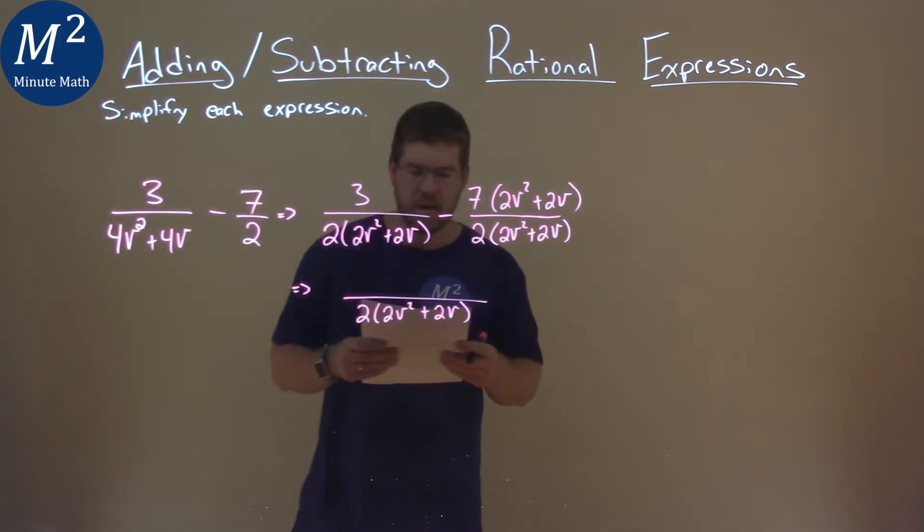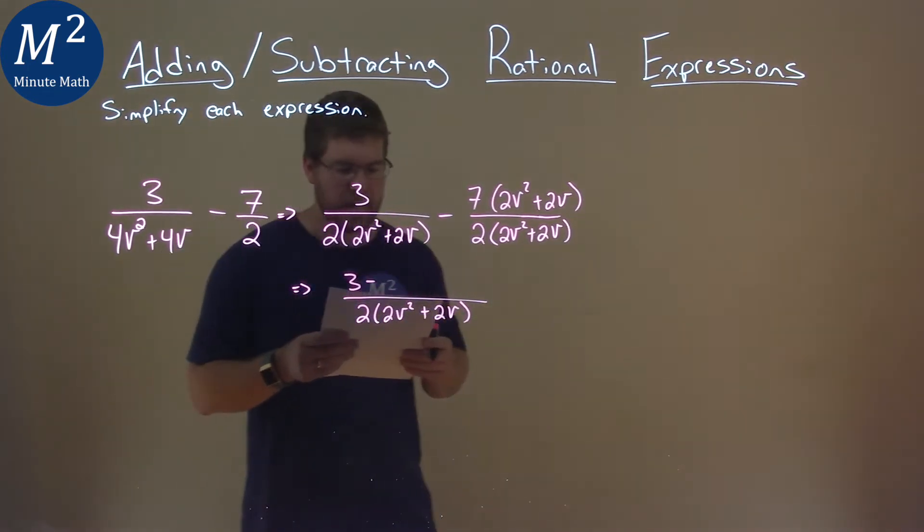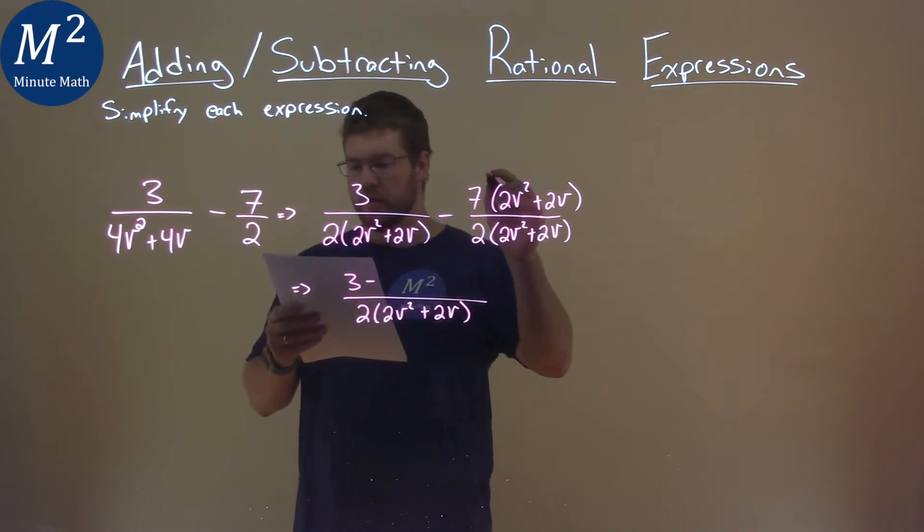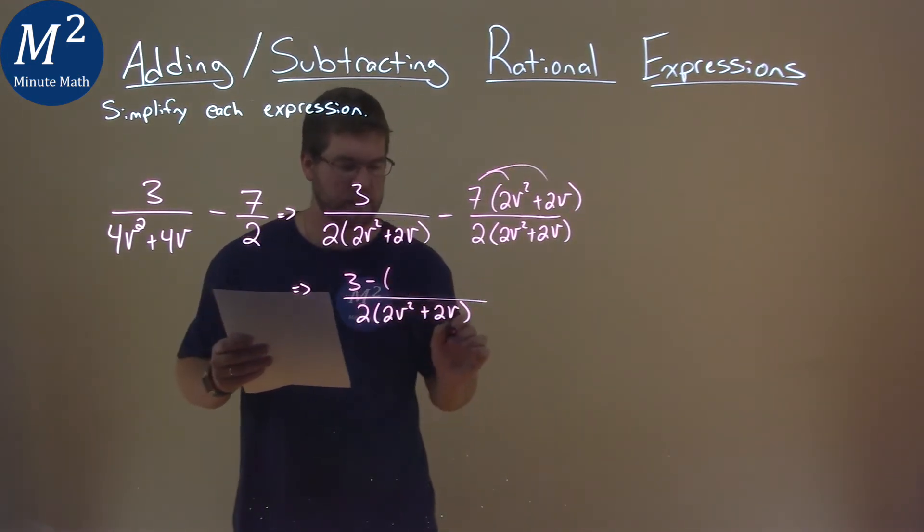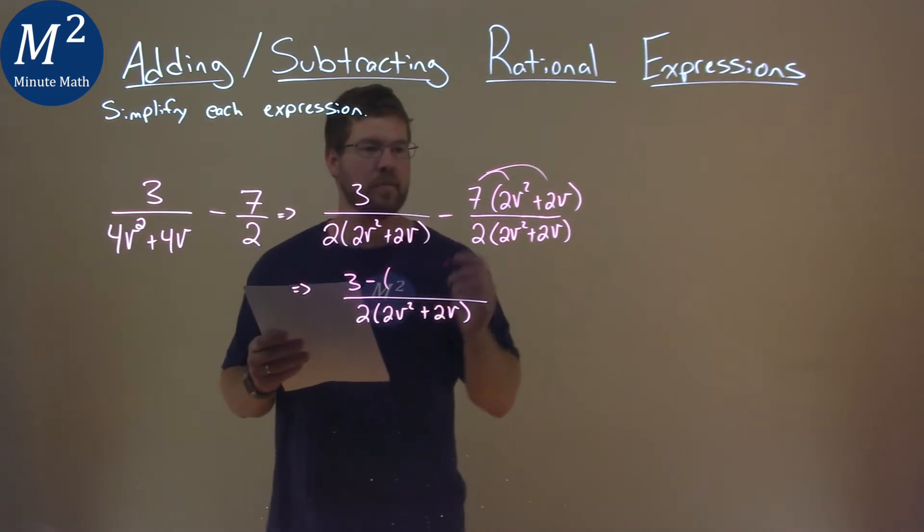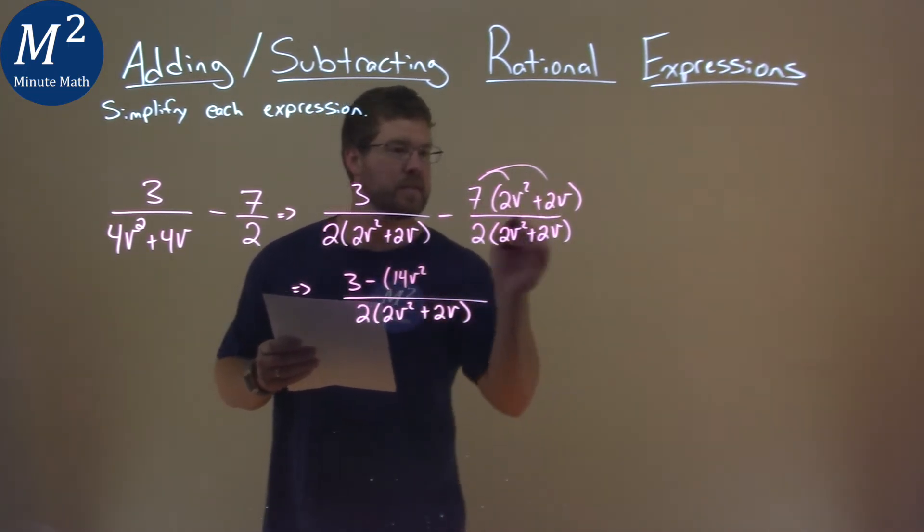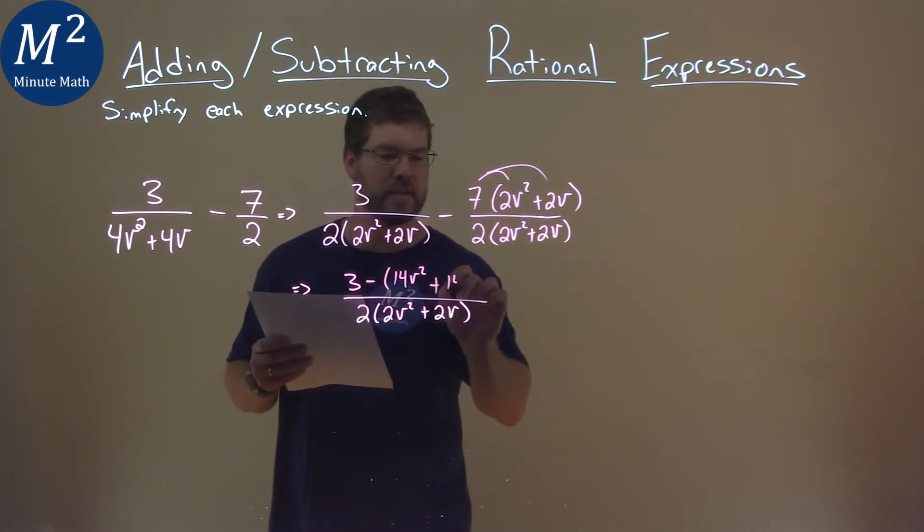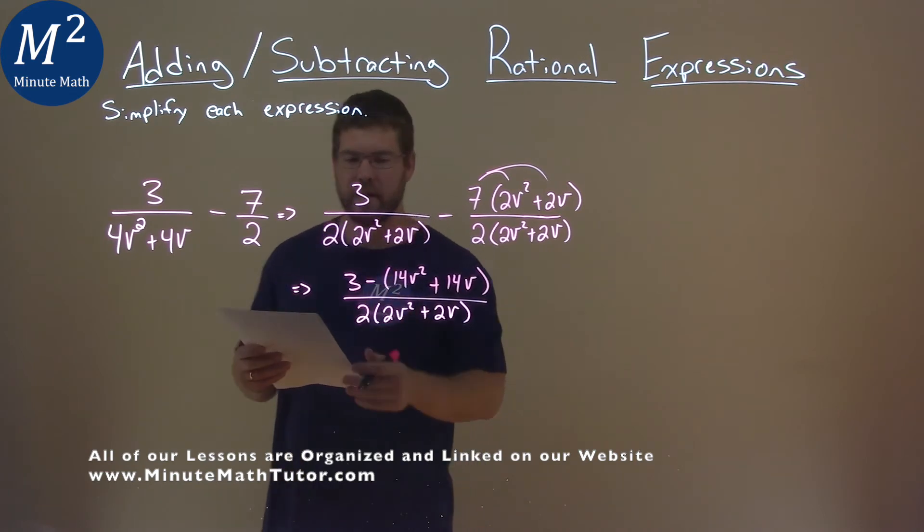And our numerator, we still have a 3 minus. Now, we distribute this right here over—we'll keep it one big fraction here—minus 7 times 2v² is 14v². And 7 times 2v is just 14v. Okay, so we're distributing it there. Don't forget that minus sign.